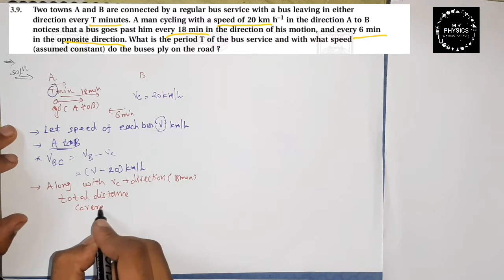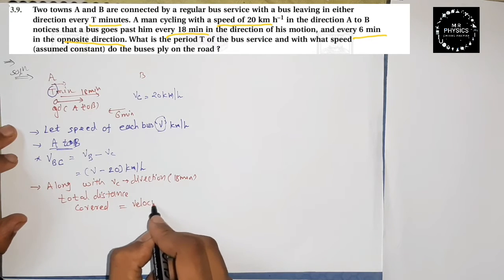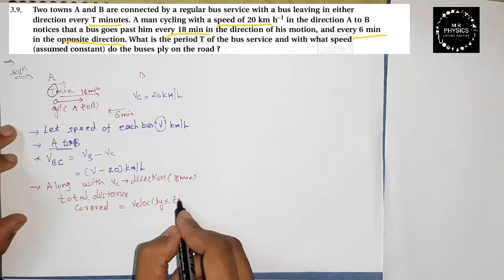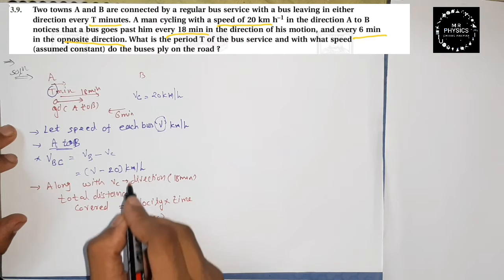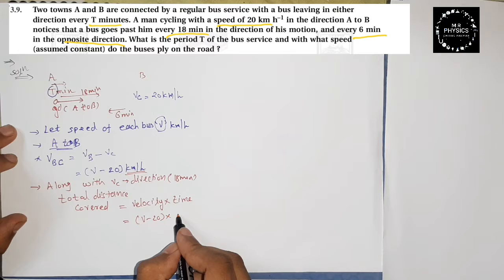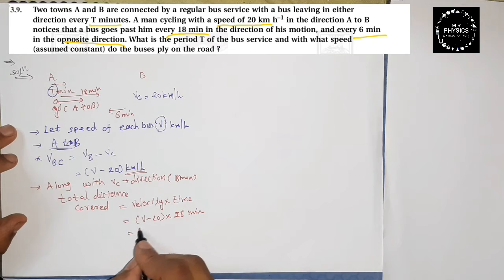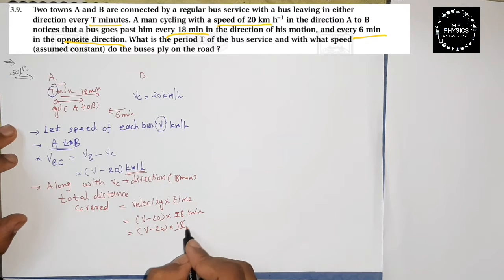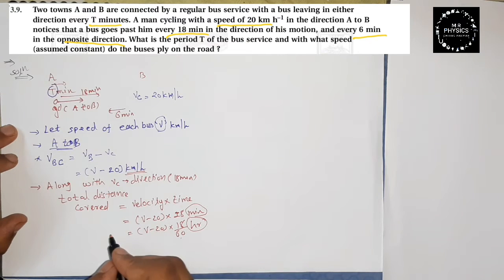The total distance covered equals velocity into time. Velocity is V minus 20 km per hour, and the time given is 18 minutes. To convert to hours, divide by 60: distance D1 equals (V minus 20) into 18 by 60. That is equation number 1.